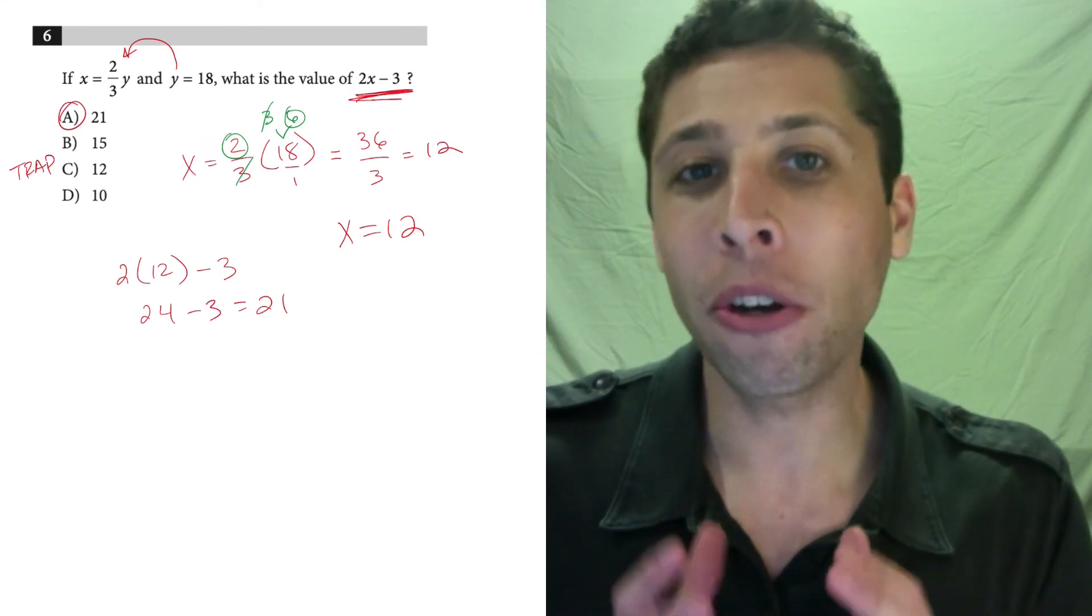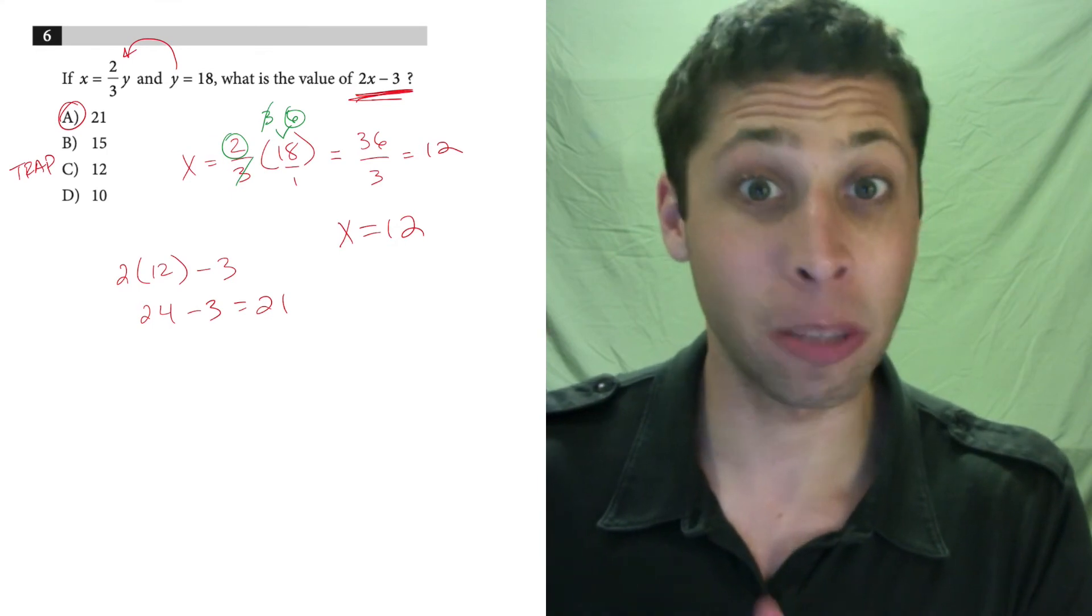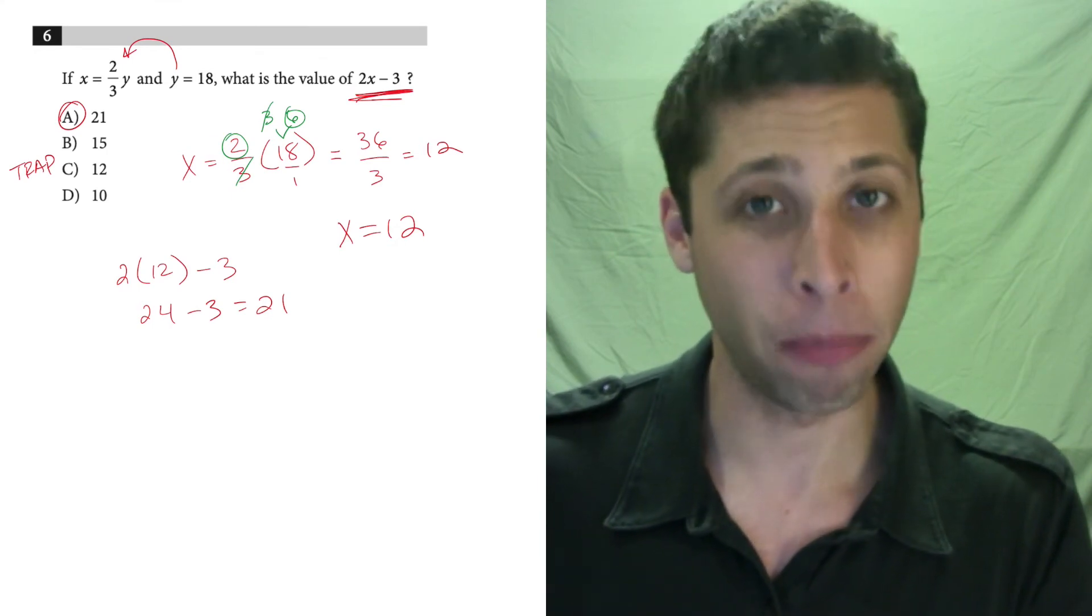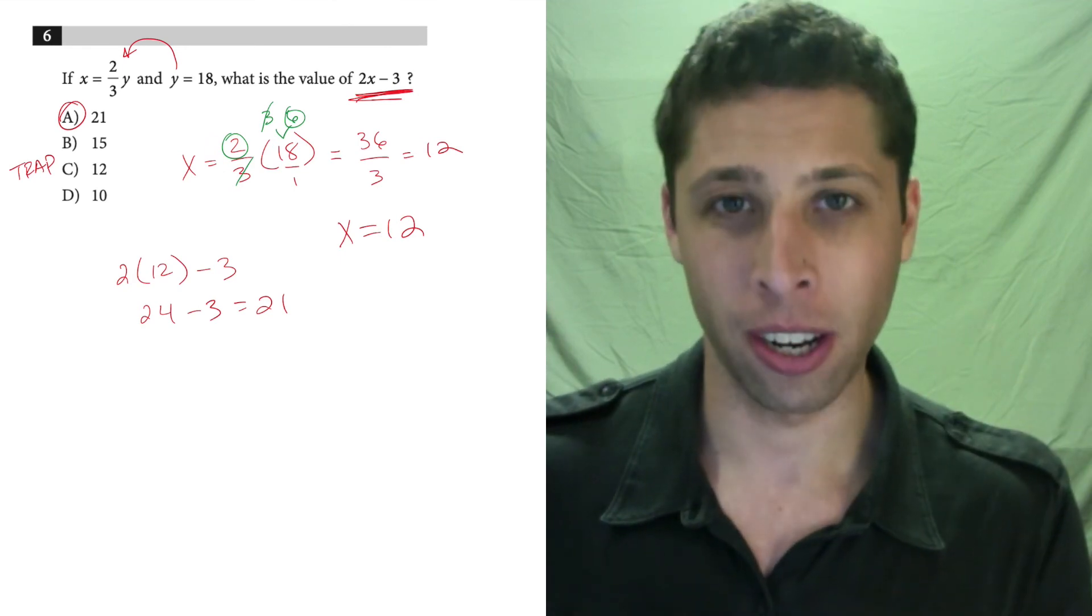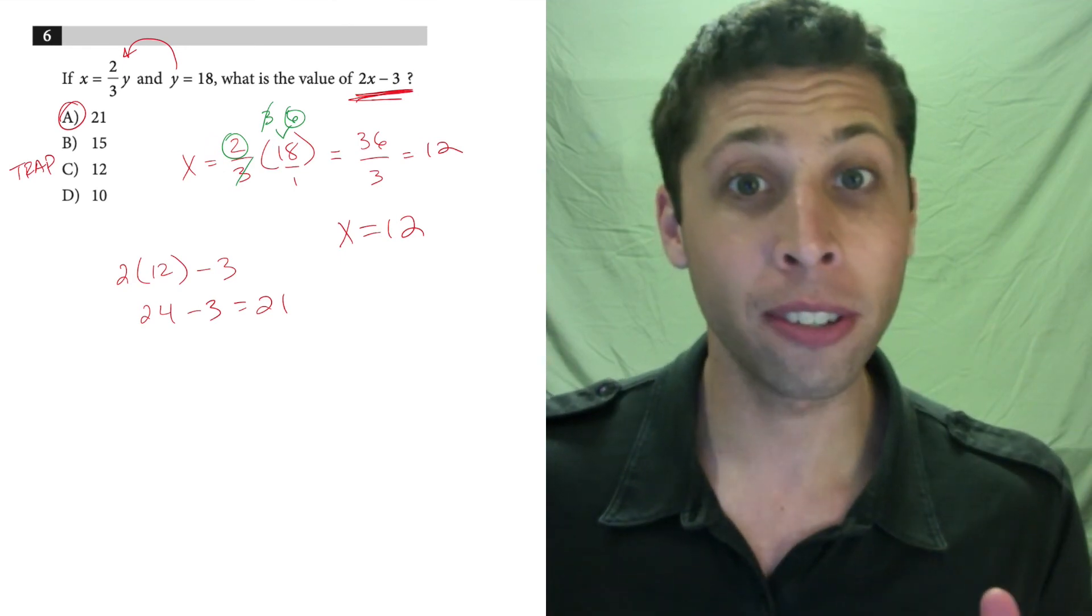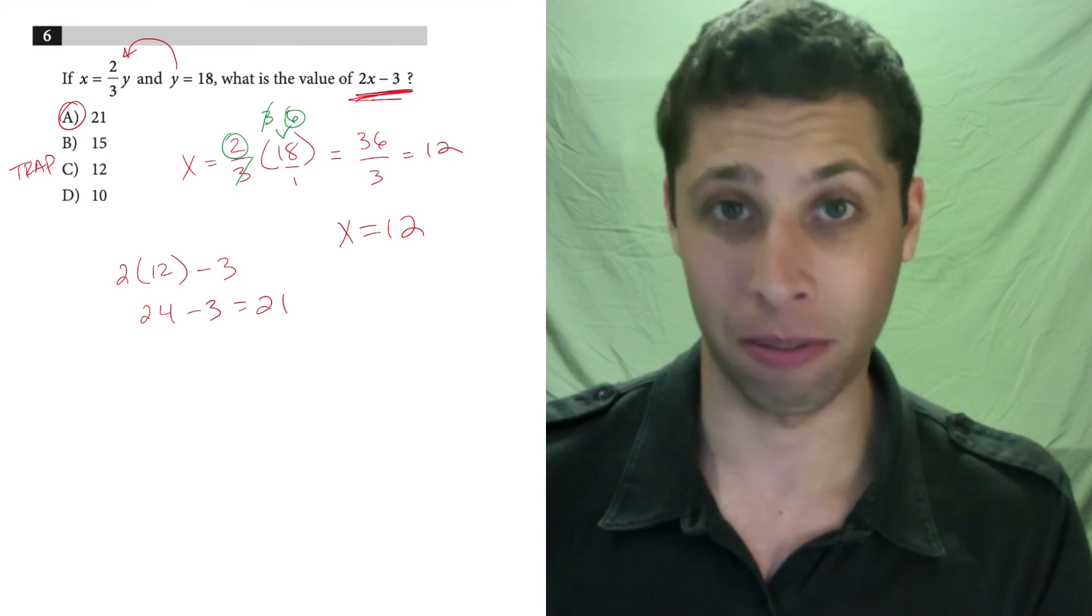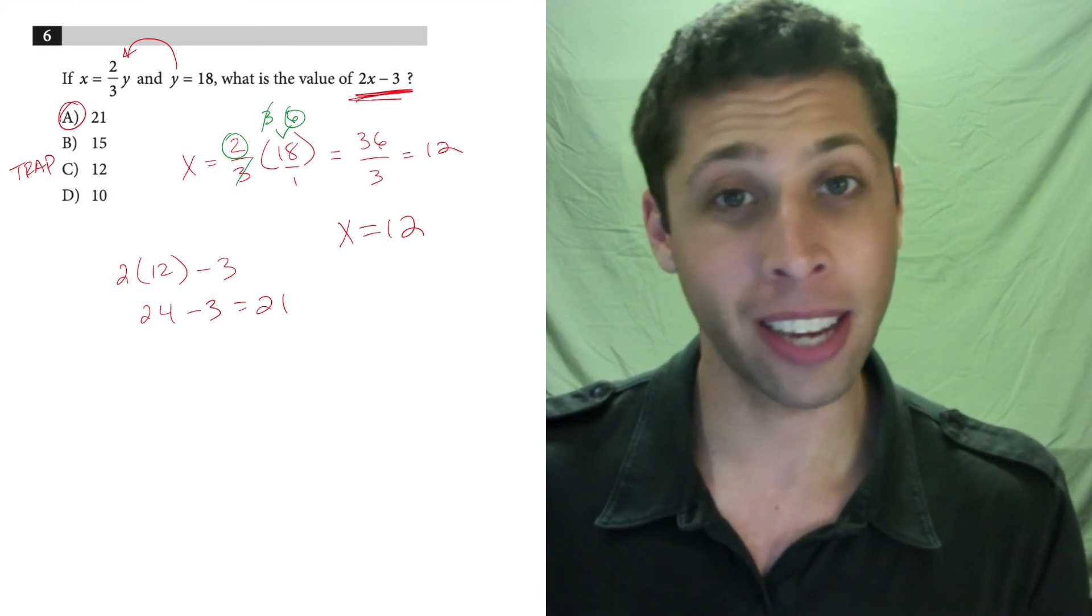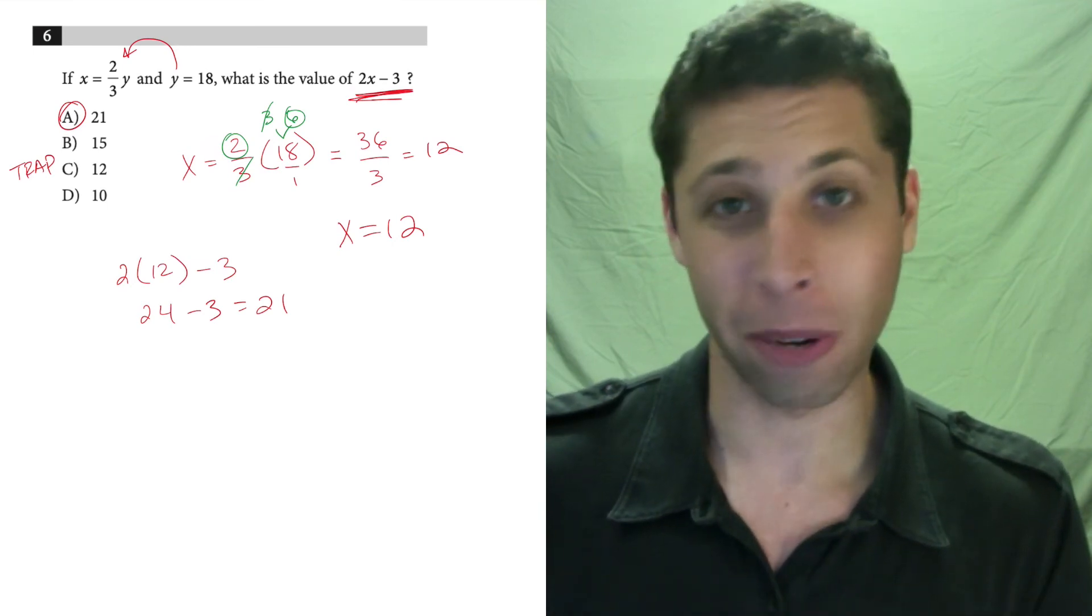So we have to override our habits and our instincts sometimes. And especially on the SAT, it can be helpful to underline the question so that you have that second reminder to just slow down, show your work, and give them exactly what they're asking for. A lot of times the second or the last step is really, really easy. You just need to remember to do it.